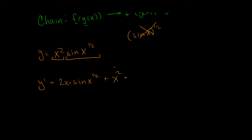The derivative of sine is cosine, so we get cosine of x to the one-half, times the derivative of the inside term, x to the one-half. The derivative of x to the one-half is one-half x to the negative one-half, based on the power rule.